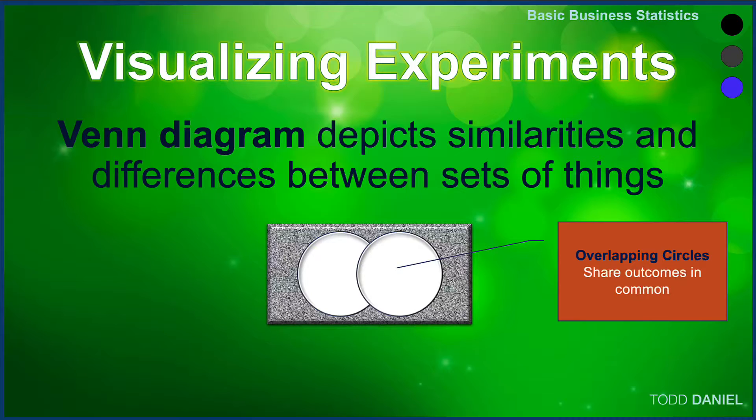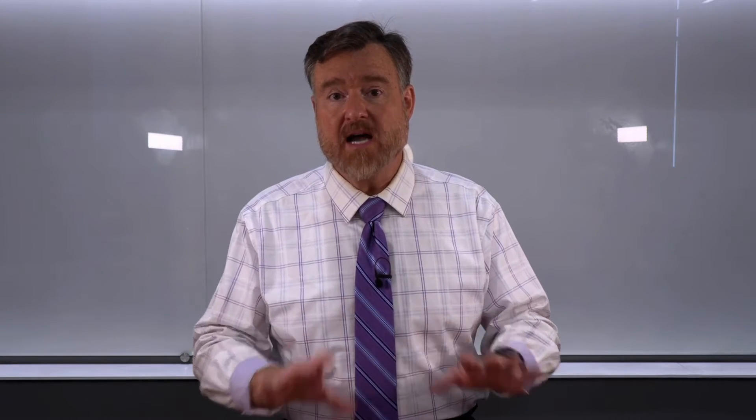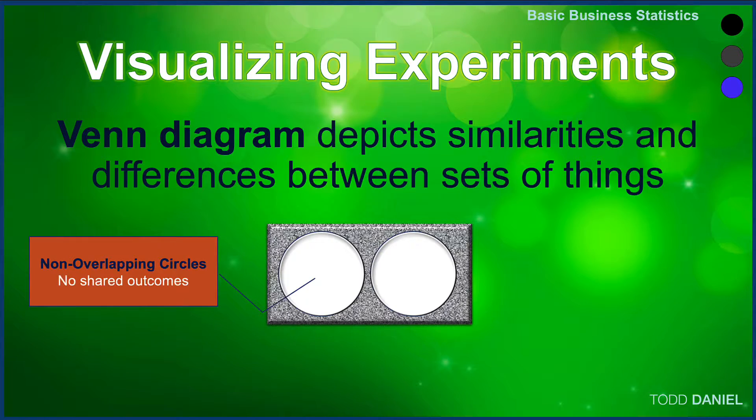In order to depict relationships of multiple events, your Venn diagram will contain at least two circles. Overlapping circles indicate that these two events share some outcomes in common. On the other hand, if your Venn diagram contains two circles that do not overlap, that tells you that there are no shared outcomes in these two events.